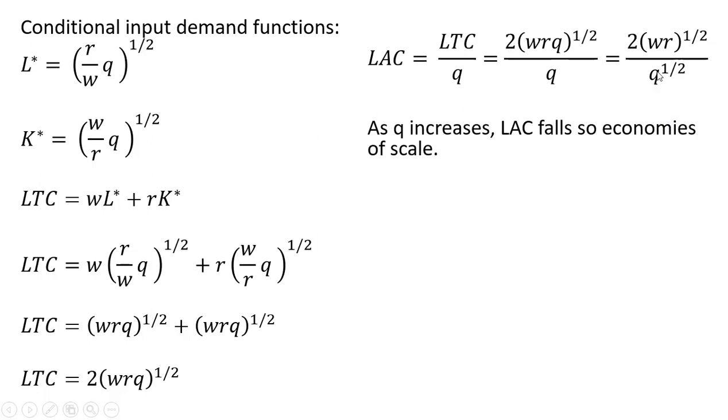One thing you'll note here is q increases. Since q is in the denominator, as q gets bigger, the long-run average cost falls. So economies of scale are present. And I should have noted at the beginning that our production function displayed increasing returns to scale.